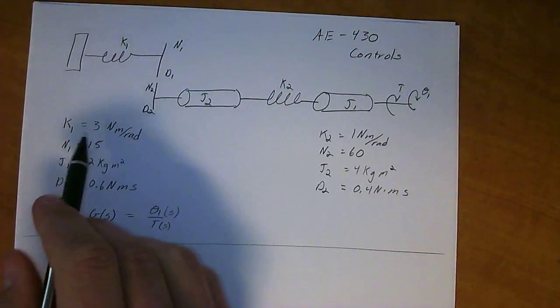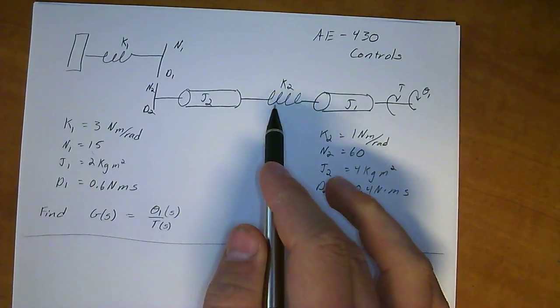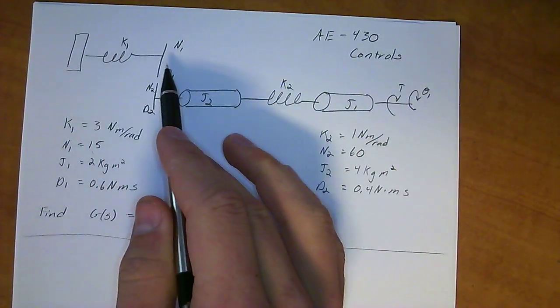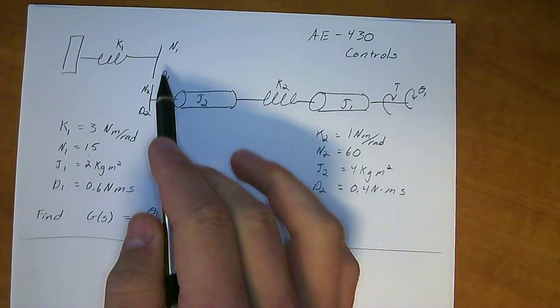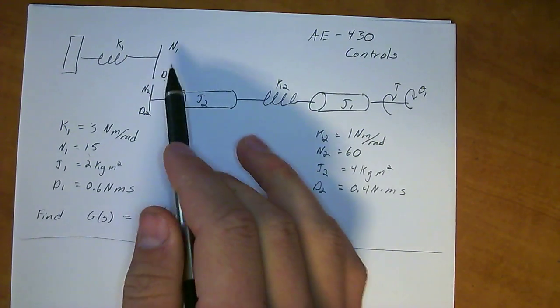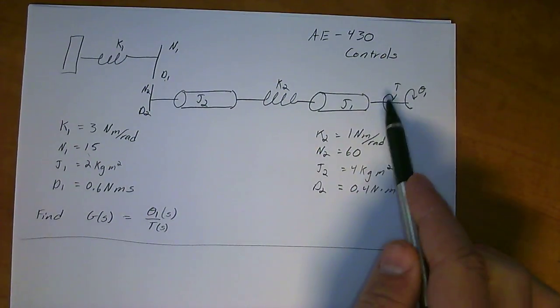We have values for all of these different parts of the system up here - the springs, the gears, the dampers. There's a damper within the gear, which is really important to notice. Otherwise you miss it and you'll screw up the entire problem. We also have the masses moving around and then we have a torque being applied over here.